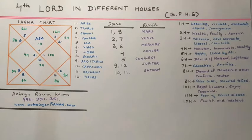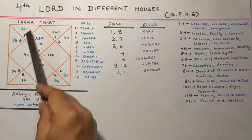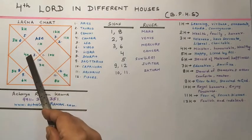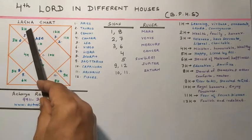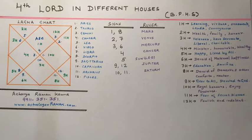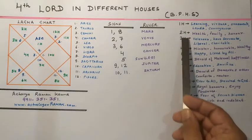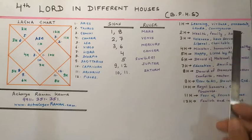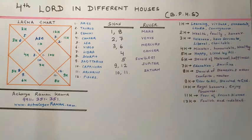If the 4th lord be in the 2nd house, the native will enjoy pleasures of all kinds of wealth, family life, and honour and be adventurous. He will be cunning in disposition.